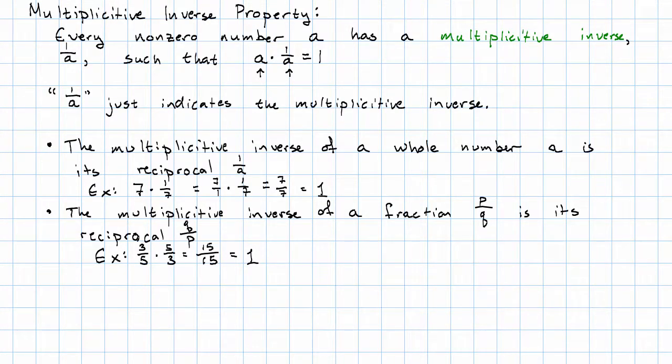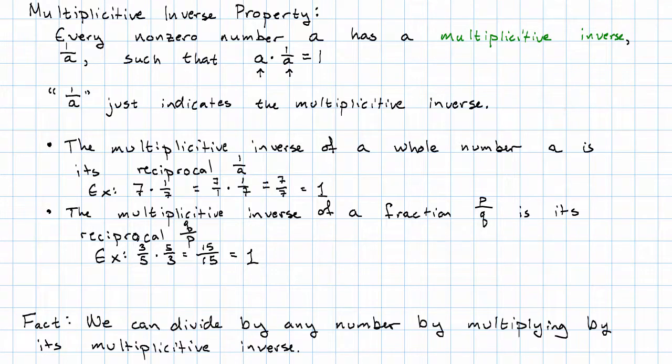Notice that I stated that property in terms of when I multiply these numbers, I get one. It is a fact that we can always divide by a number by multiplying by its multiplicative inverse. The reason why is actually a little bit tricky to show. And we'll see why this is the case in the future when we have a little bit more of the machinery of algebra at our disposal.